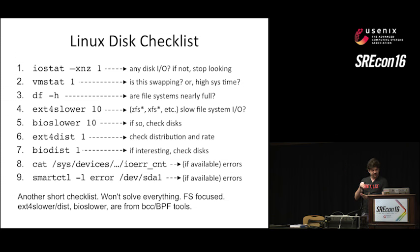Netflix Vector is an instance analysis tool we have — it's open source. This dashboard shows the influence of the USE method where you can go straight to an instance and look at CPU utilization and saturation, network utilization and saturation, memory utilization and saturation, and so on. We still need to add a few more metrics to this, but it gives a very quick overview of system health.